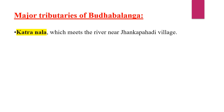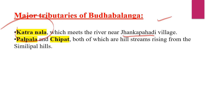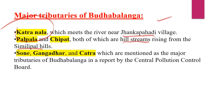Now let's look at the major tributaries of Budha Balang river. Katranal is a major tributary which meets the Budha Balang river near Jankapahadi village. Palkala and Chipat are both hill streams arising from the Similipal hills. Gangadha and Katra are the major tributaries mentioned by the Central Pollution Control Board.